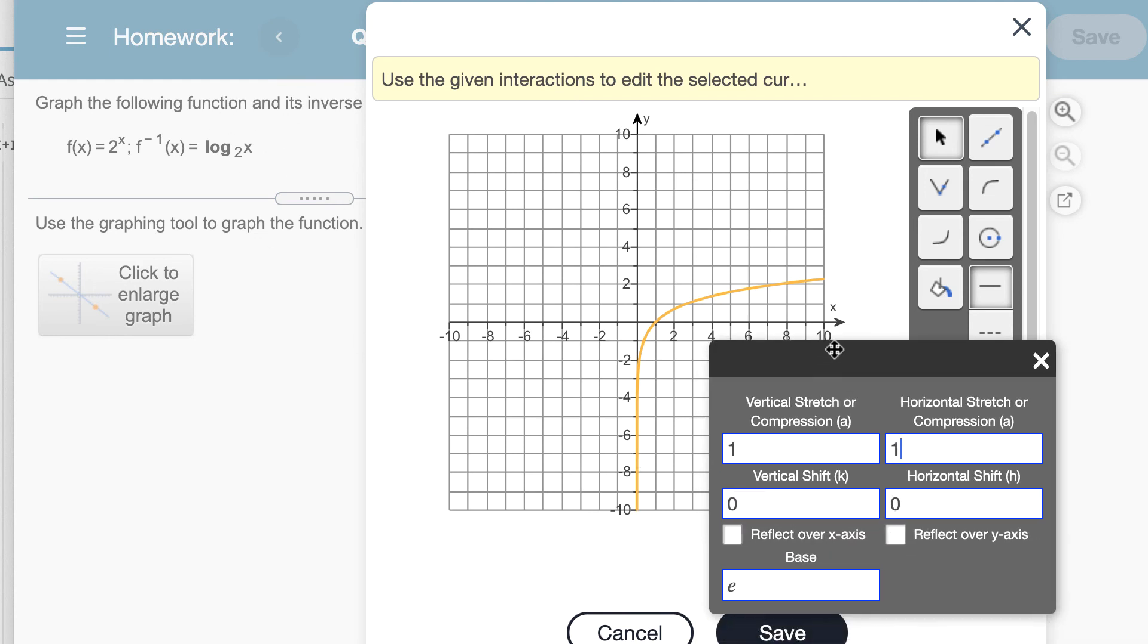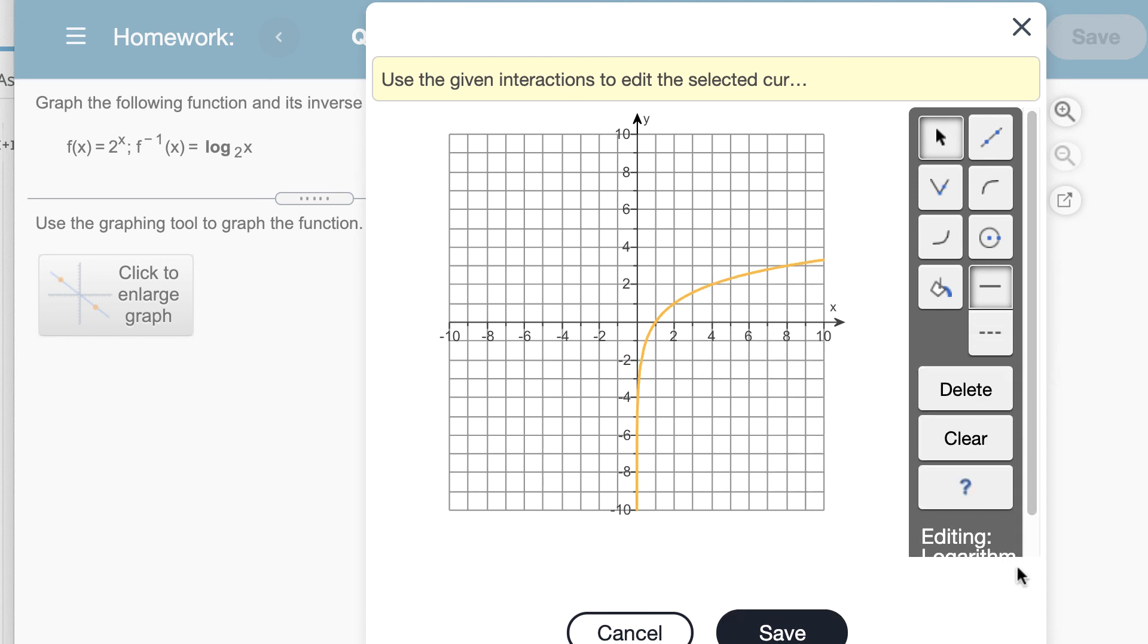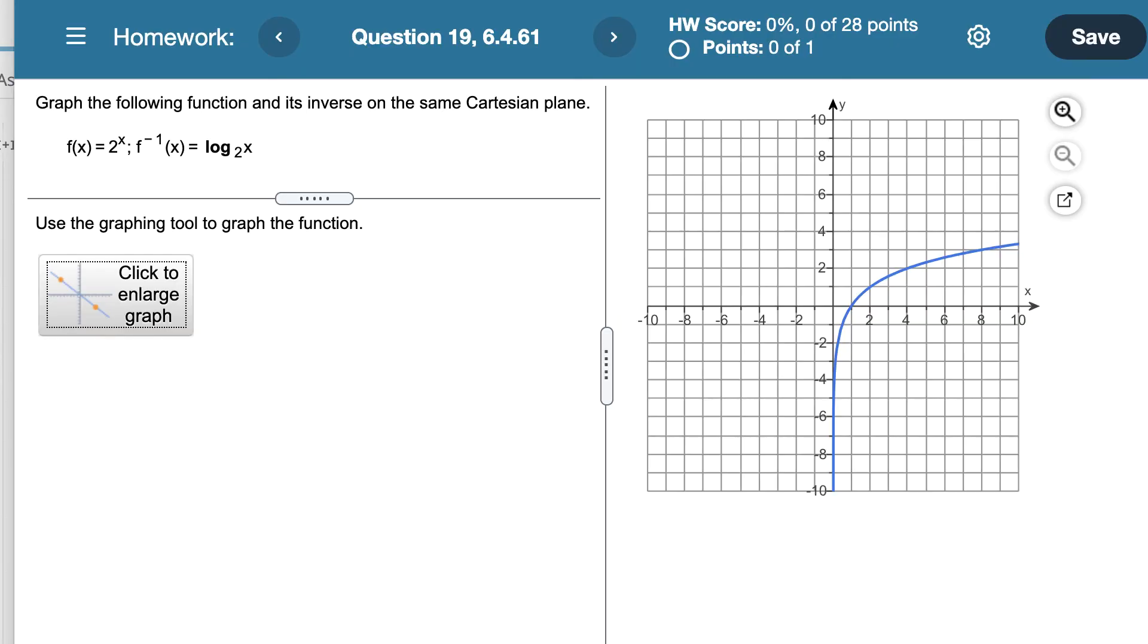Notice that the base of this logarithm is not correct. The default is e. But when I look at my logarithm, it's a base of 2. So I just want to make sure that I change that to be 2. When I have all of that entered, I can exit the graphing box. And then from there, click Save and check my answer.